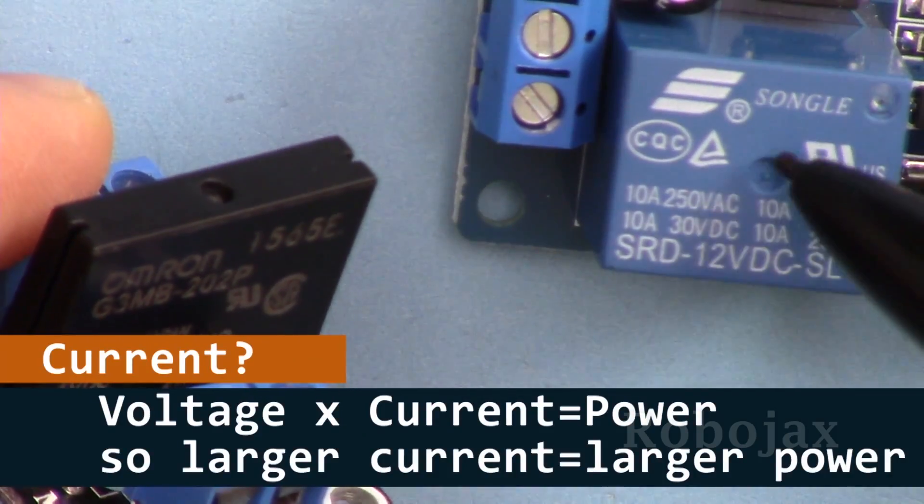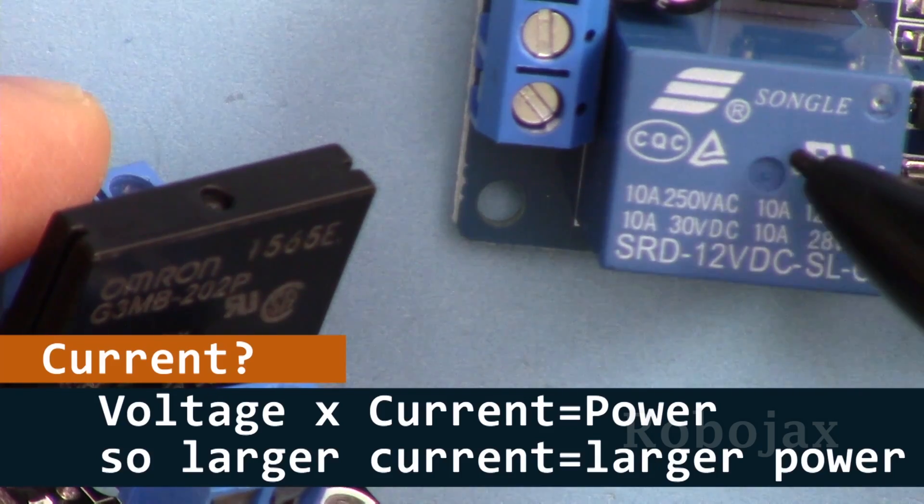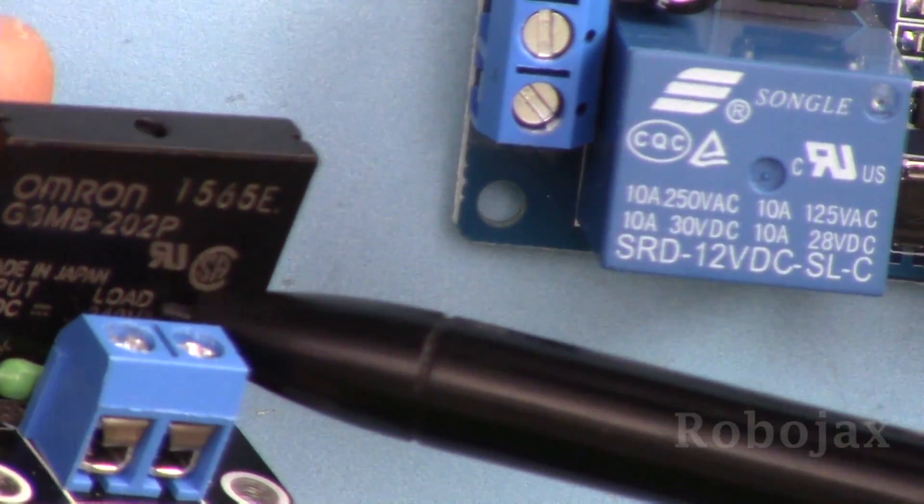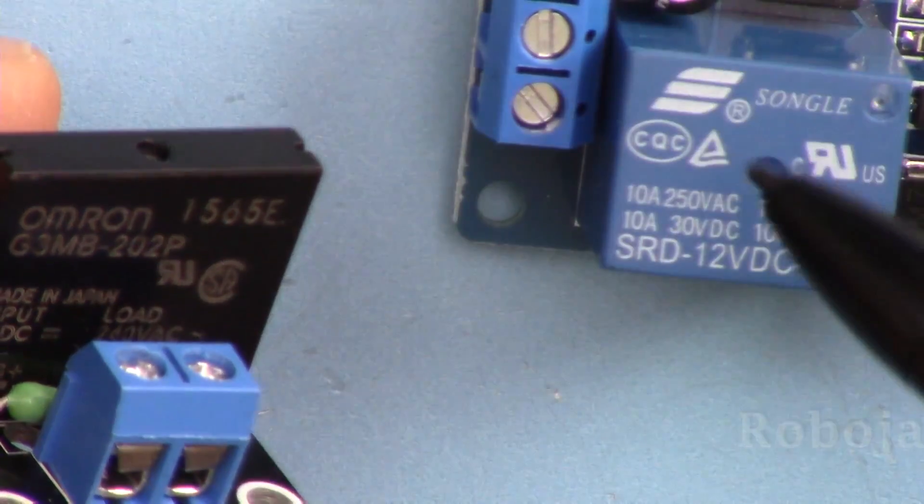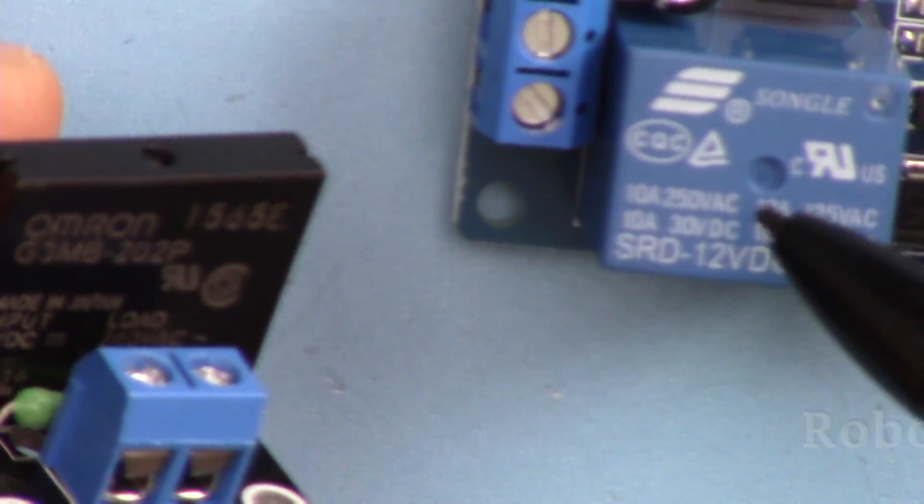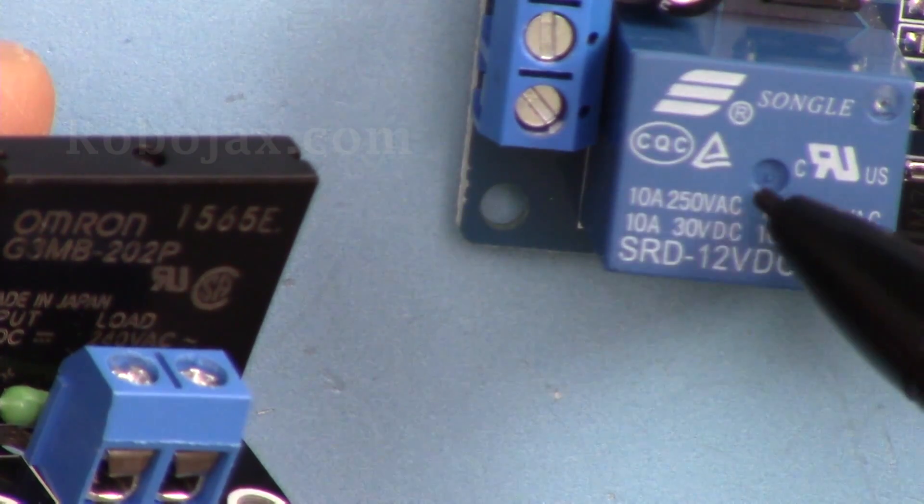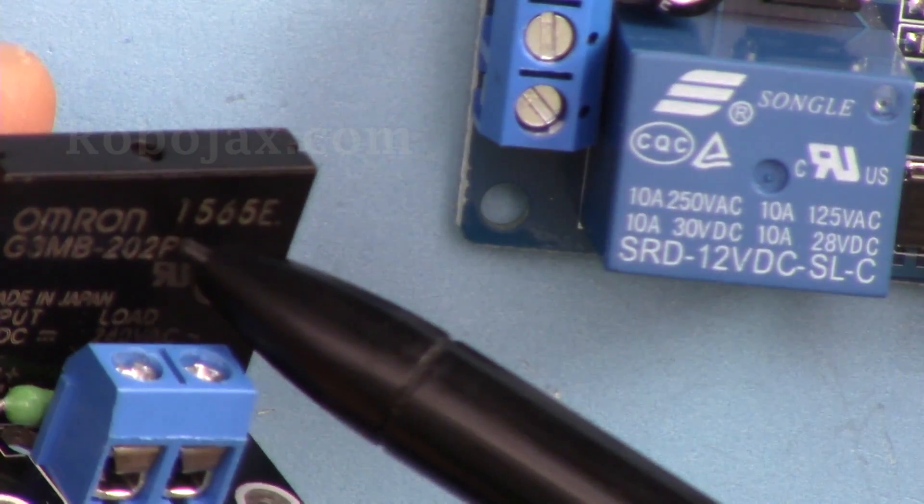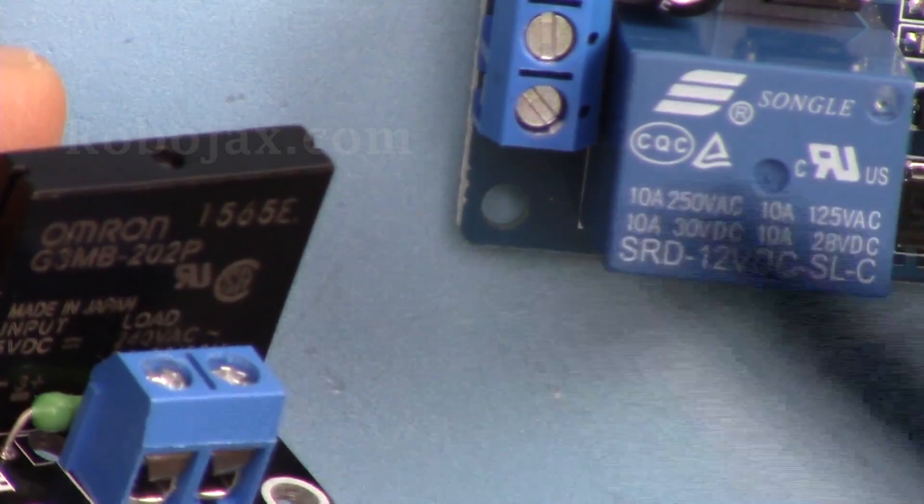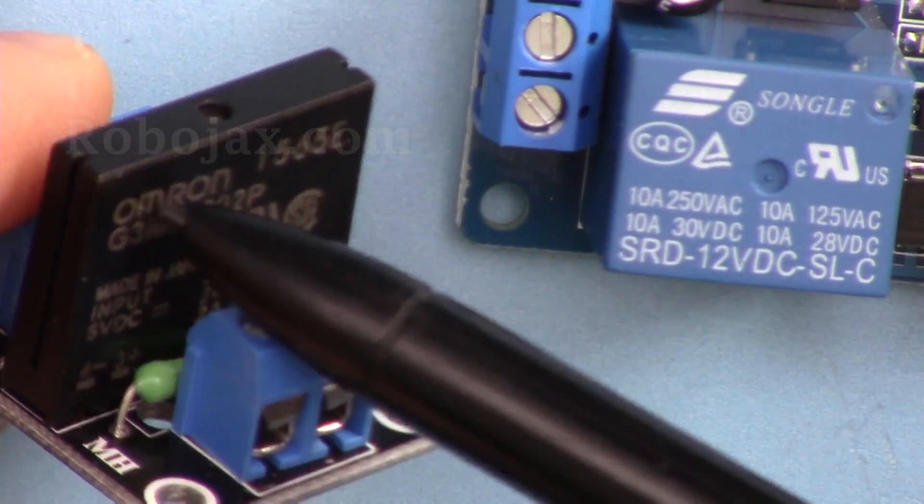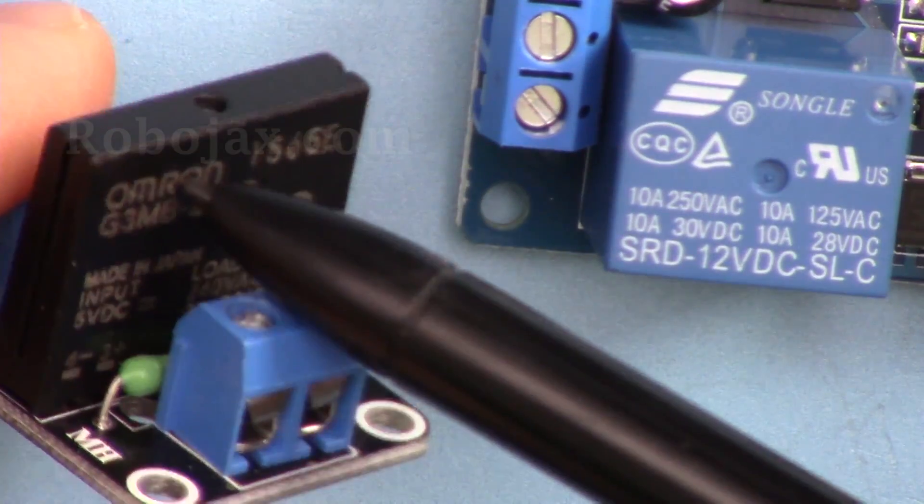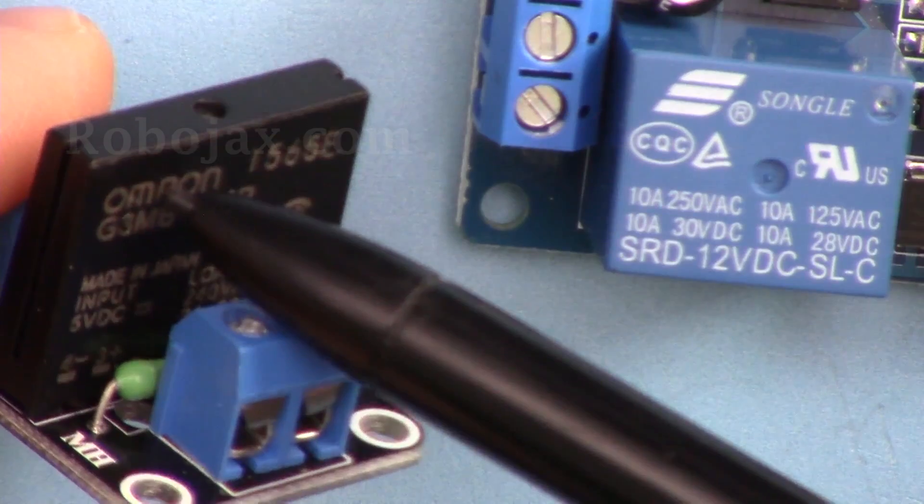This one has the advantage of handling large amounts of current. For example, this can handle 2 ampere load and this can handle up to 10 ampere load at even 250 volts. So this will be 2.5 kilowatt while this one can handle about 400 watts.